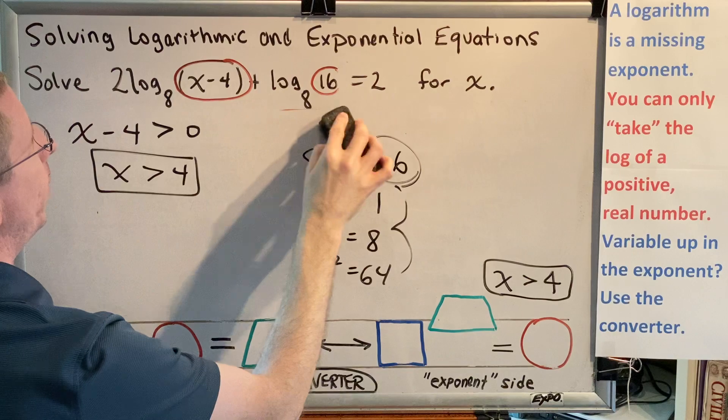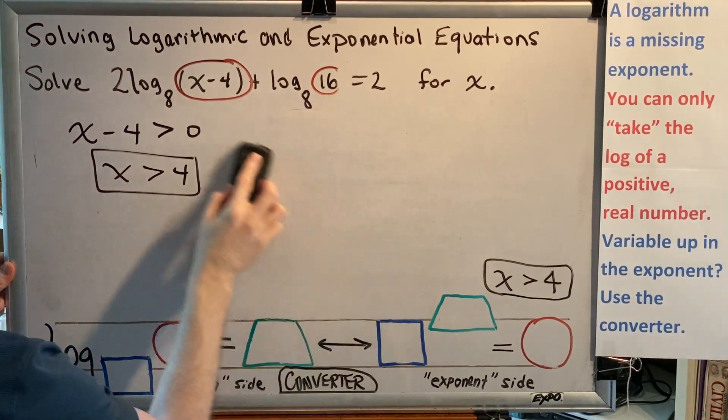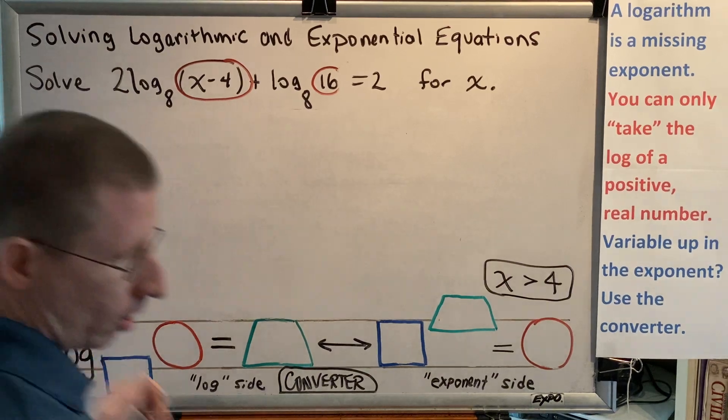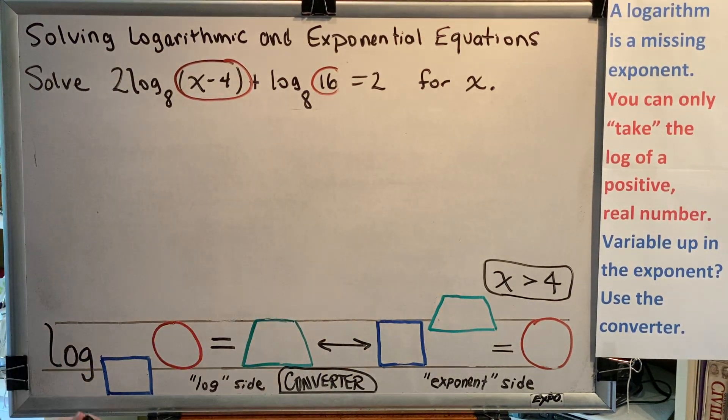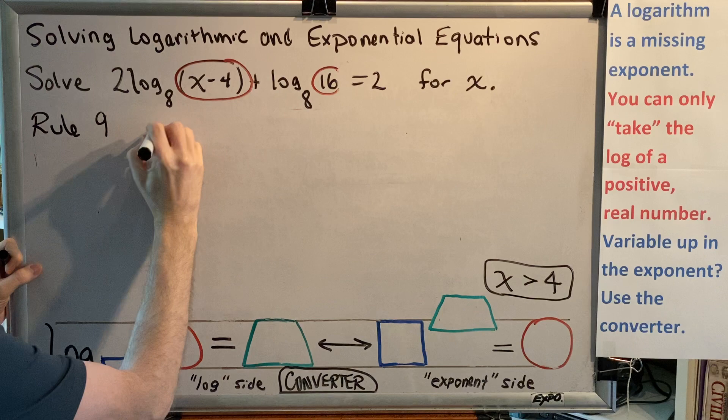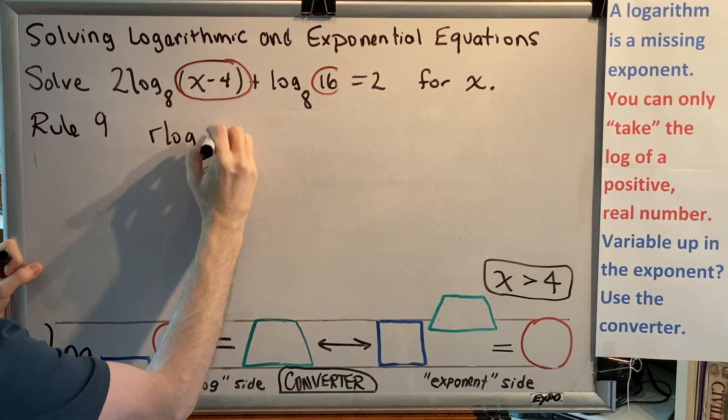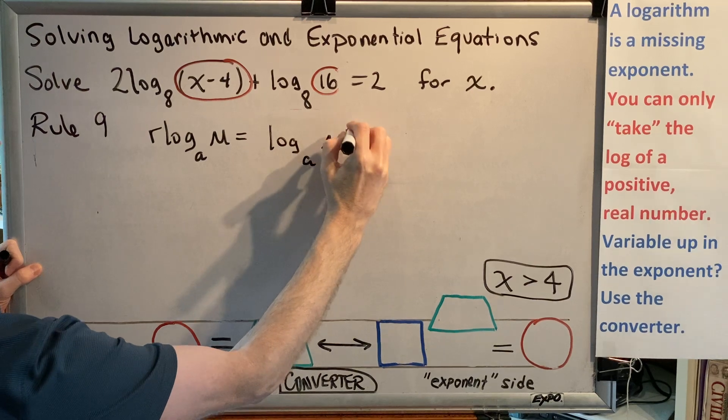So, here we go. We're now going to begin using our log properties in an attempt to get x alone. I know that we need to combine these two logs into 1. But before we can do that, we have to get rid of this 2, so we're going to use rule 9.